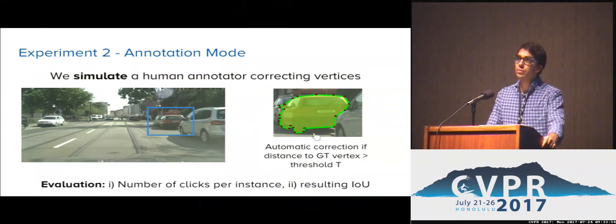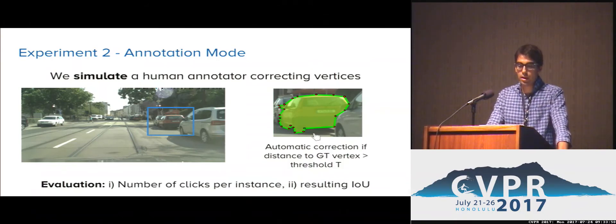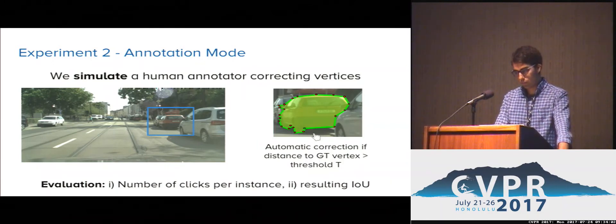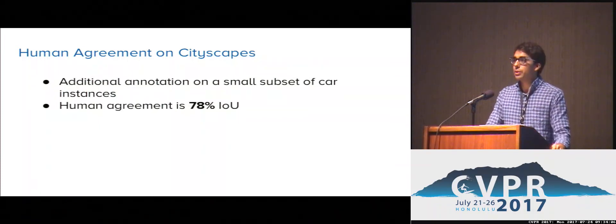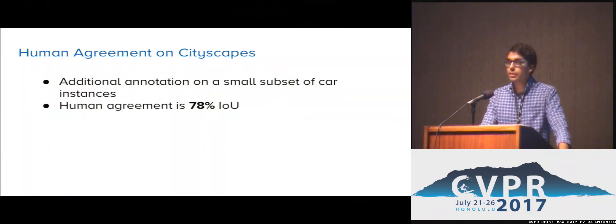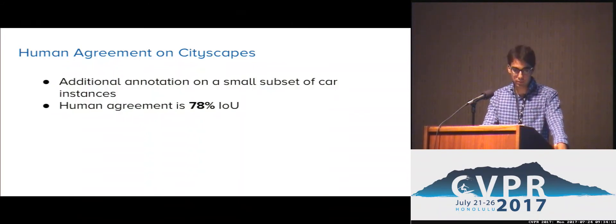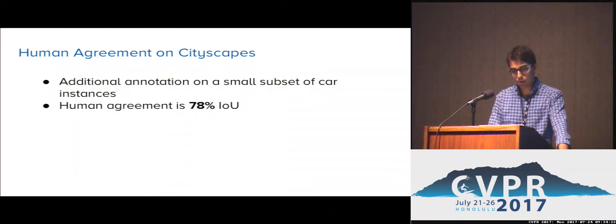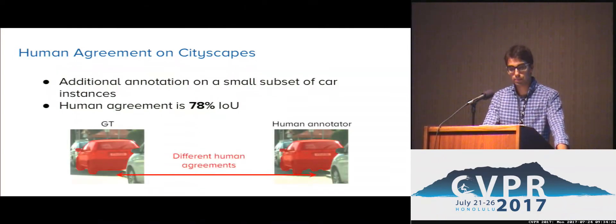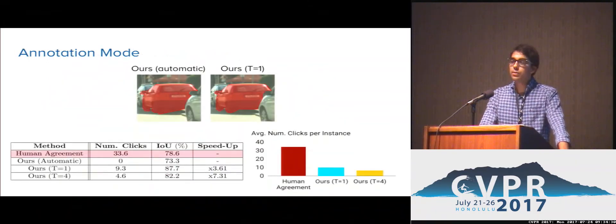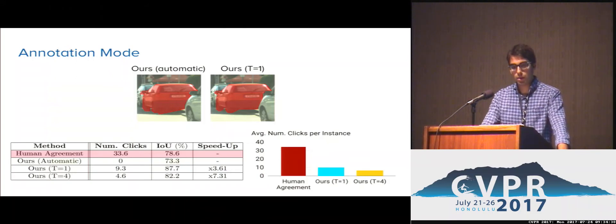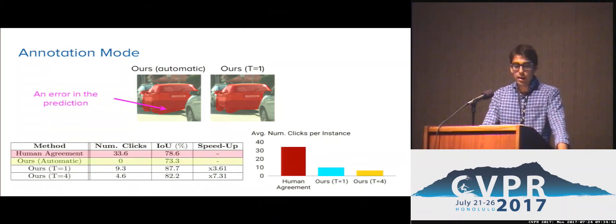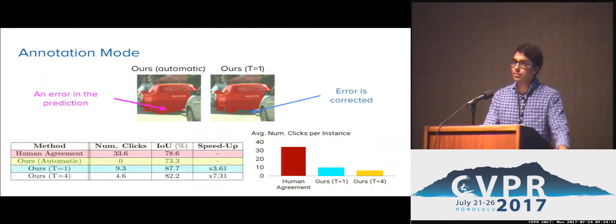To compare the different models, we count the number of clicks required to annotate each instance on average, and we consider the resulting IOU. First, we computed the human agreement on the Cityscape's dataset — we asked a professional annotator to annotate a small subset of instances, compared their annotation with the ground truth, and found that the human agreement was 78% IOU. The human annotations required an average number of 33.6 clicks to annotate each instance. Our model, without any kind of user interaction, performed well but did not reach the level of human agreement. However, once we introduce corrections, our model achieves human-level IOU while requiring a much reduced number of clicks.